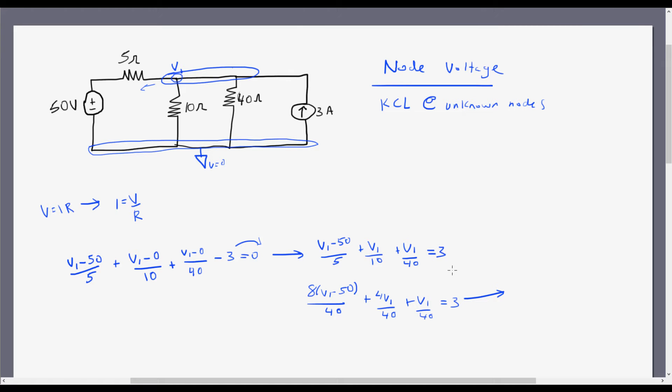So what am I going to have? I'm going to have 8 V1 minus 50, plus 4 V1 plus V1, all over 40, equals 3.